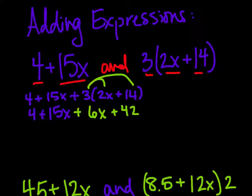From here, we can find like terms, 15x and 6x. Those are like terms because our x's have the same exponent, and they're also just one single x.